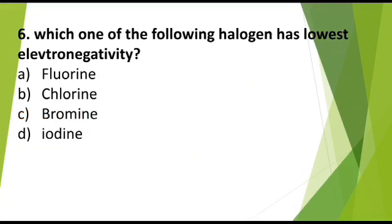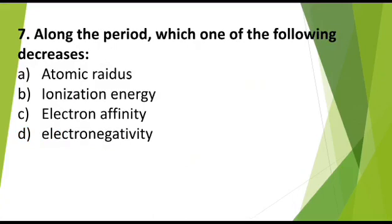MCQ number 6. Which one of the following halogen has lowest electronegativity: a) Fluorine, b) Chlorine, c) Bromine, d) Iodine. Correct answer is iodine.